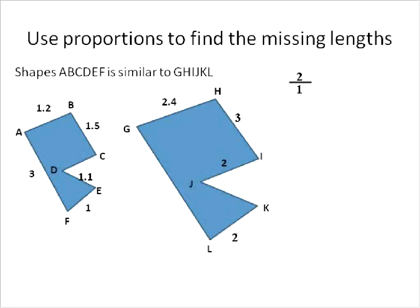In other words, the lengths on this shape are twice as long as the lengths on this shape. And we can test that with our 1.5 and 3 that we discovered earlier. 1.2 times 2 is 2.4, 1.5 times 2 is 3, and 1 times 2 is 2. So we know now that it's a 2 to 1 ratio. So this will make life a little bit easier for us.